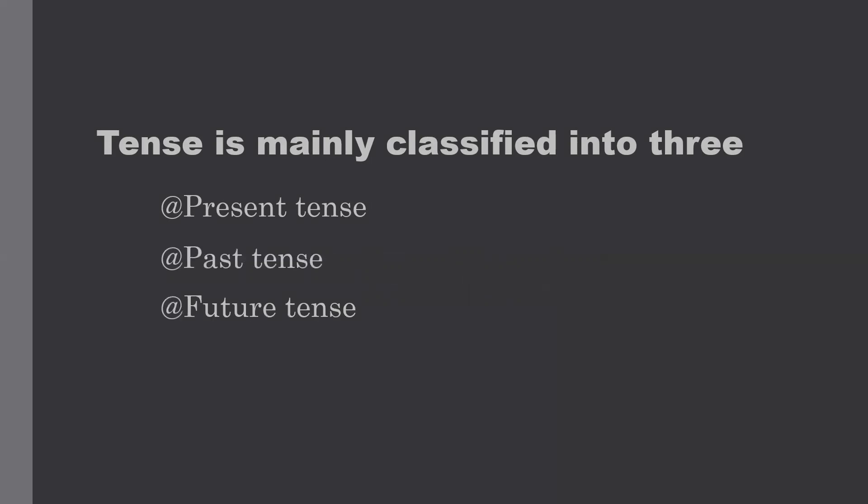Present tense means something happening right now — I am talking to you and you are listening to me. Past tense means something already finished — yesterday I watched a movie, yesterday I went to meet my friend. Future tense refers to things yet to happen — tomorrow I will watch a movie, tomorrow we will play cricket.